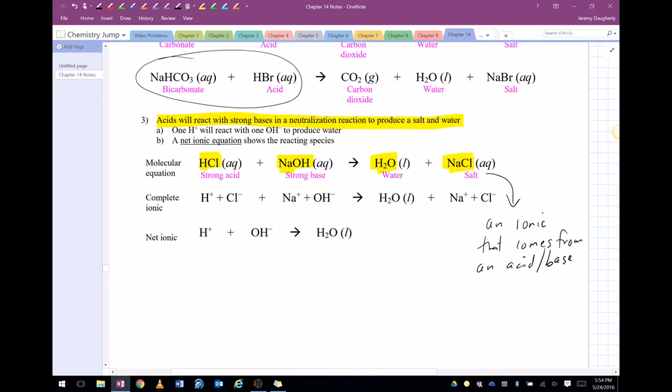And we can also see what's called the complete ionic that we looked at before and the net ionic. Now, in the net ionic we can see here's the acid, hydrogen ion, here's the base, hydroxide ion, and it only forms water. So we can see how that sort of plays out.